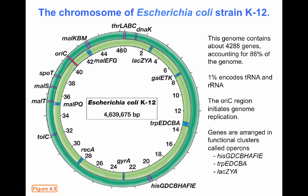The genes in the bacterial chromosome are organized in functional clusters called operons. For example, the HIS operon contains the HIS G, D, C, BHA, FI, and E genes — all under the control of a singular regulatory region. When that region is activated, all those genes are transcribed together as a single RNA molecule, which is very different from how transcription works in eukaryotes.